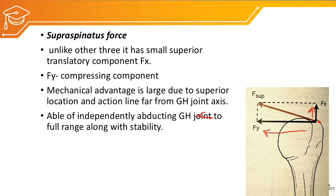The supraspinatus muscle is independently able to abduct the glenohumeral joint to full range, along with stability of the glenohumeral joint. Now we understand that supraspinatus and deltoid are responsible for creating abduction — that is rolling of the head of the humerus upward. But there must be forces which pull the head of the humerus downward to create a pure abduction, creating the inferior slide of the humeral head. As we learned in arthrokinematics, during abduction the head of the humerus must translate or slide inferiorly.